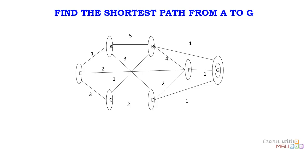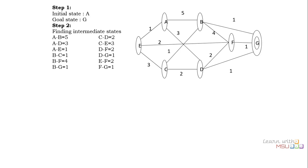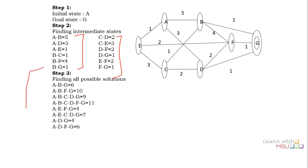Consider a graph problem: identify the shortest path from node A to node G. We have various algorithms available for finding shortest paths. Step 1 is goal formulation — we must identify the initial state (A) and the goal state (G). Step 2 is problem formulation — we identify all intermediate states and all possible paths from A, and all paths leading to G. Using these intermediate states, we can explore possible solutions.